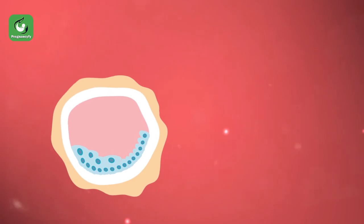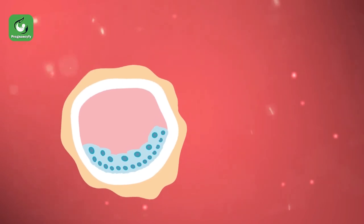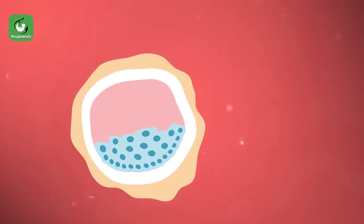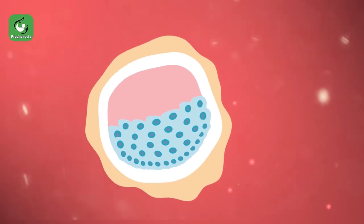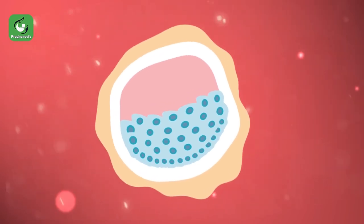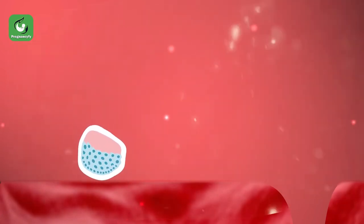The zygote begins to divide from one cell to two, then two to four, and then four to eight, and so on. As it does, it travels through the fallopian tube to the uterus — a journey that takes three to five days.